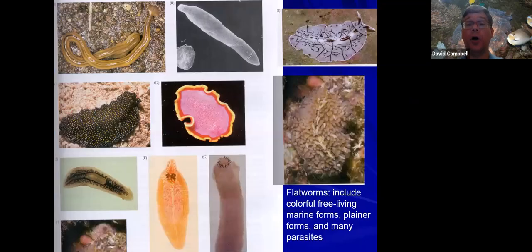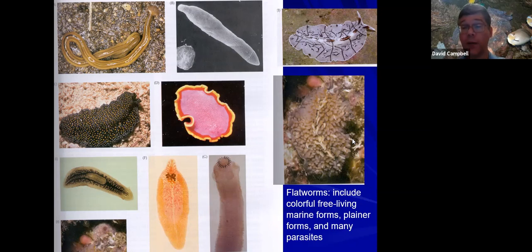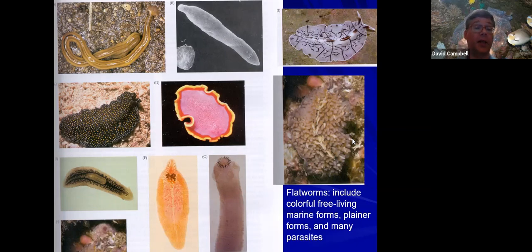The flatworms are another large group of worms, and there are some fairly colorful free-living ones. Most of them are in the ocean, although the one on the top left is a land-dwelling one. Also, like the roundworms, there are quite a few parasitic flatworms, as well as lots of little tiny, obscure, plain-looking flatworms. Parasites include things like tapeworms and flukes. There's quite a large group of the trematode fluke-type things that are external parasites on fish — they'll attach to the outside of fish and basically digest some tissue and suck fluids out of it. Pretty much every type of fish has its own types of parasites, so there are a lot of these out there.